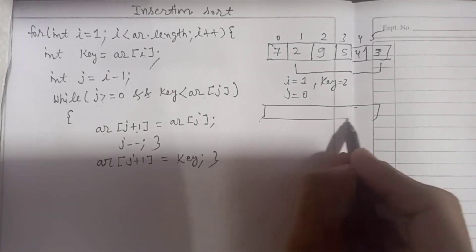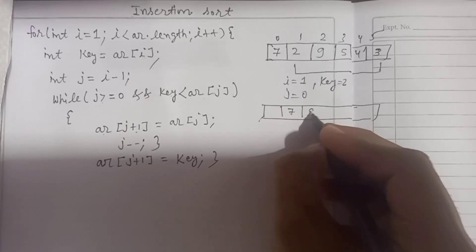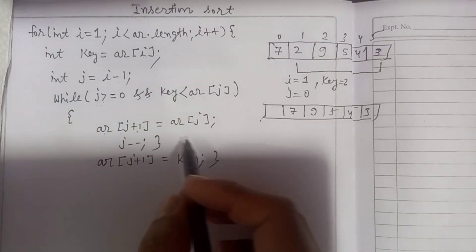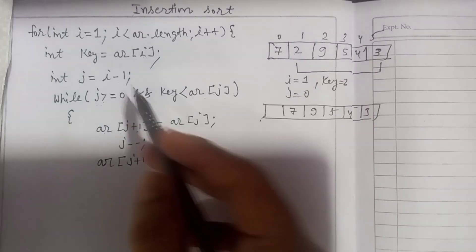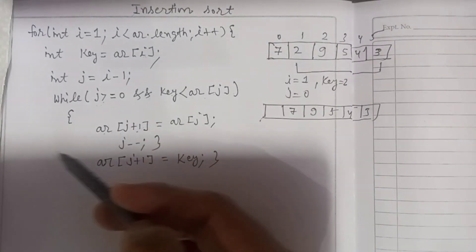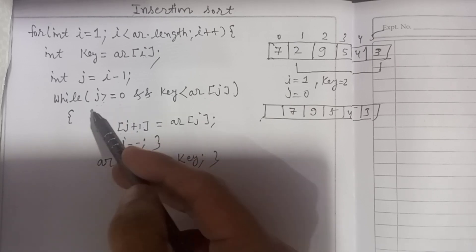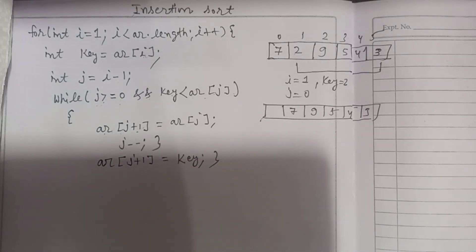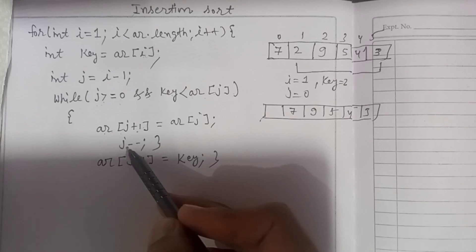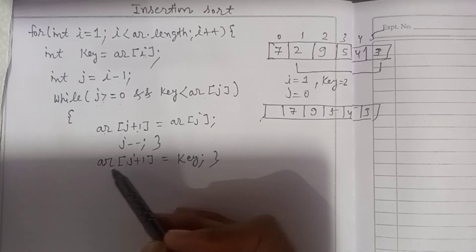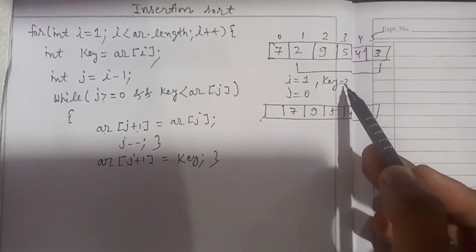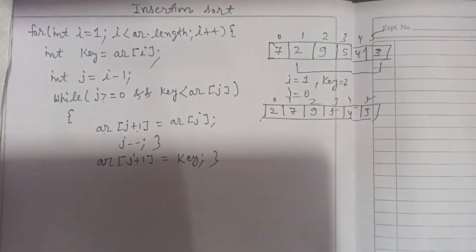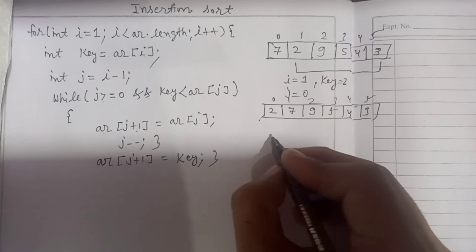Since the condition is true, arr[j+1] — that is arr[1] — gets the value of arr[0], so 7 is shifted right. The array now becomes: 7, 7, 9, 5, 4, 3. Then j becomes minus one. The condition j greater than or equal to zero is false, so the inner loop terminates. On arr[j+1], which is arr[0], the key value 2 is stored. After the first round: 2, 7, 9, 5, 4, 3.